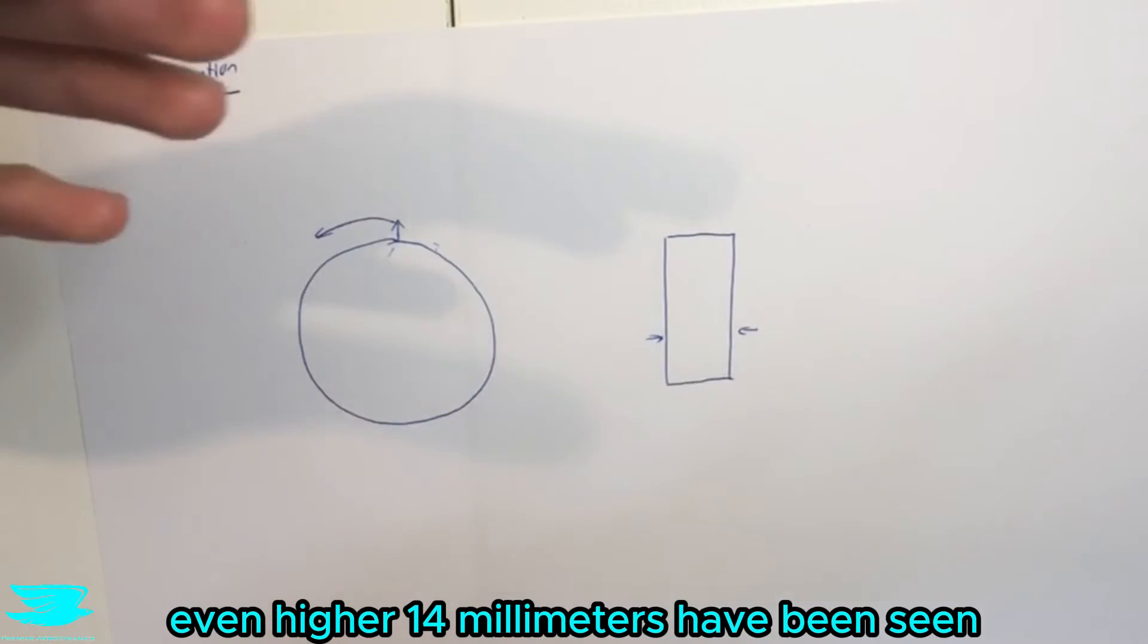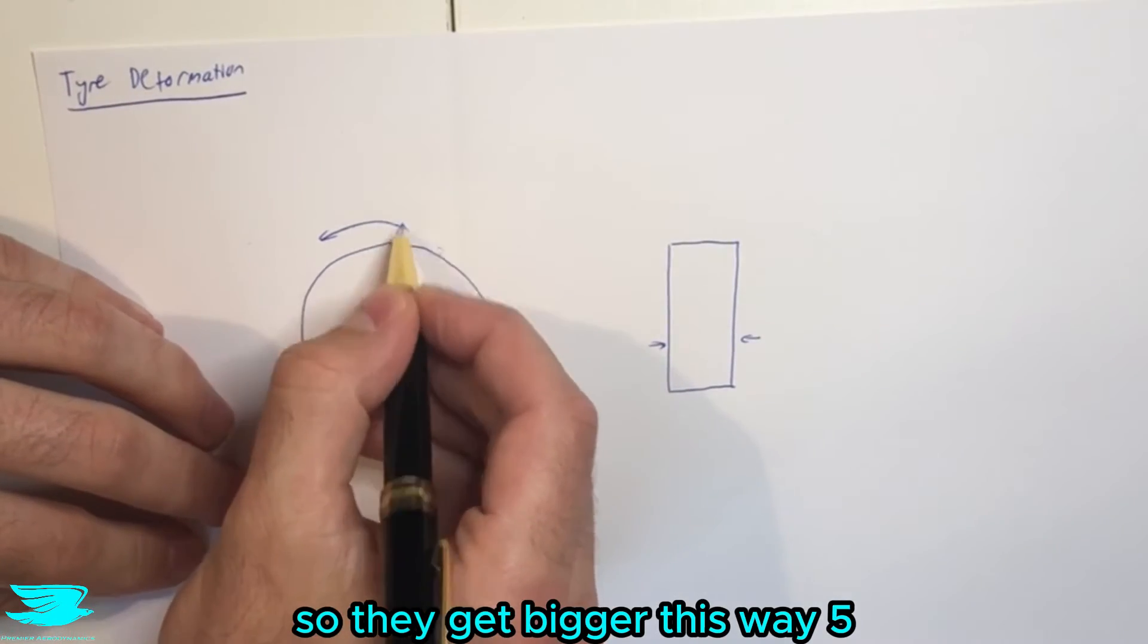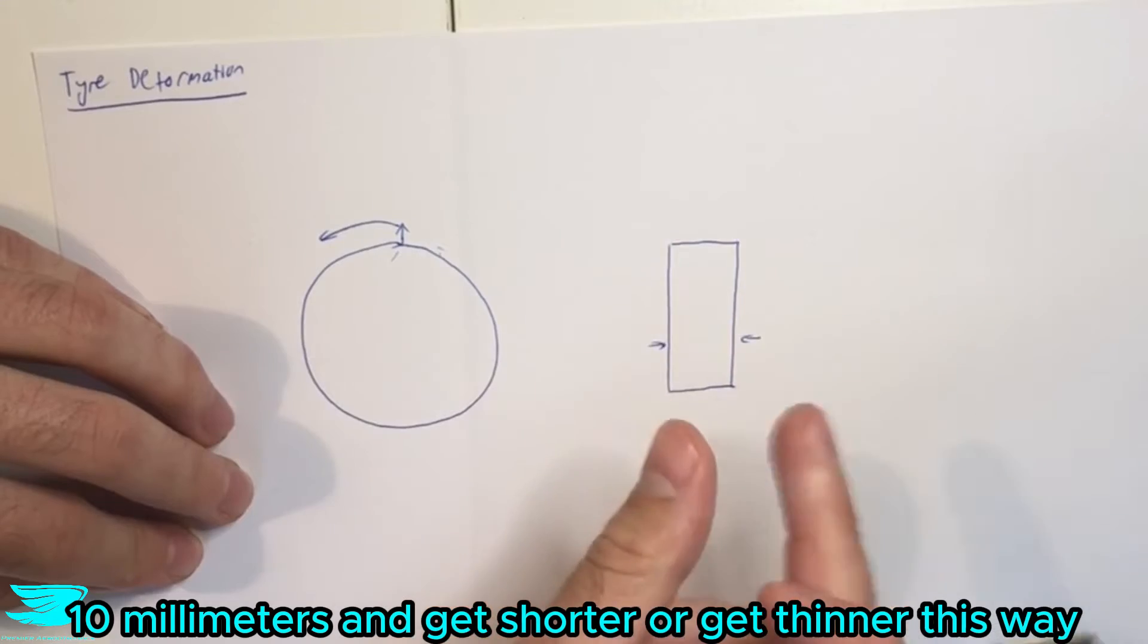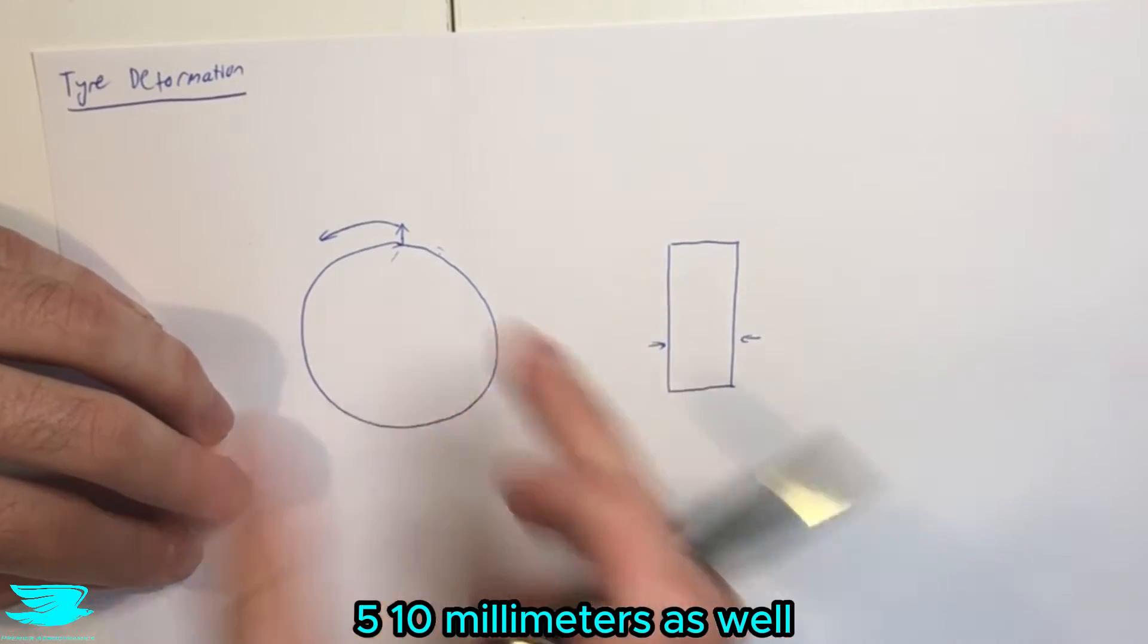14 millimeters have been seen. So they get bigger this way, 5-10 millimeters, and get shorter, or get thinner this way, 5-10 millimeters as well.